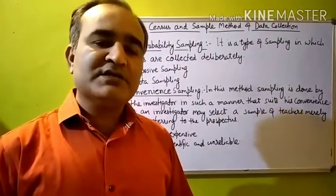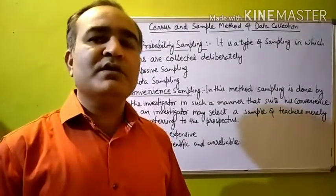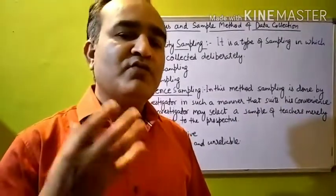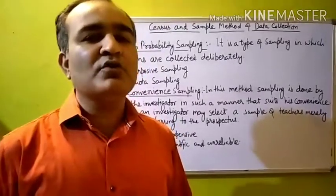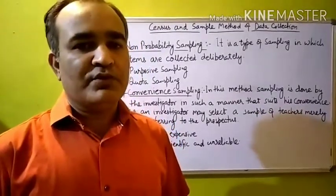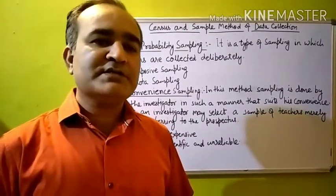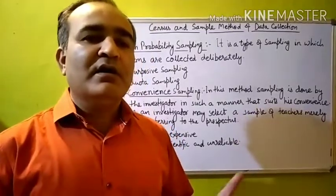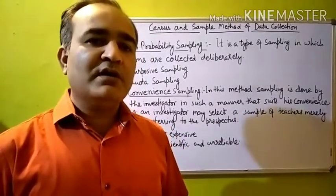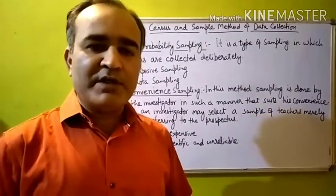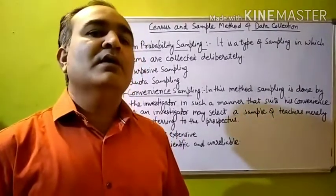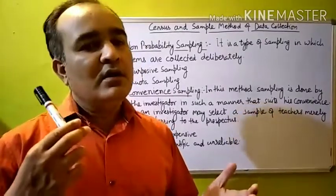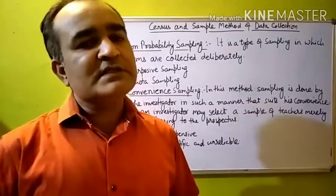The demerit of convenience sampling is that it is an unscientific and unreliable method, because whatever information you get, the reliability is less. So we have seen non-probability sampling and its different types: purposive sampling, quota sampling, and convenience sampling.